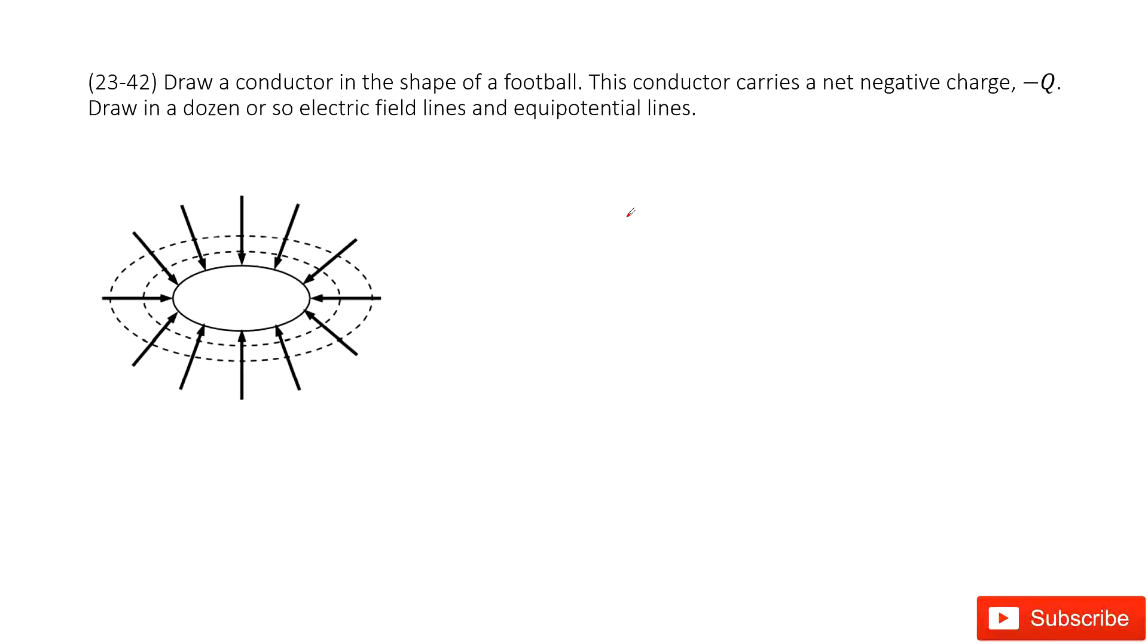Chapter 23 is about electric potential. We can see we have a conductor in the shape of a football, and this conductor carries a negative charge Q.